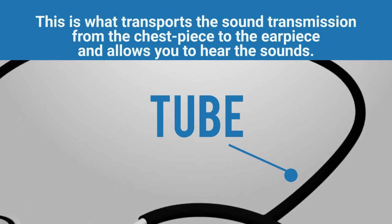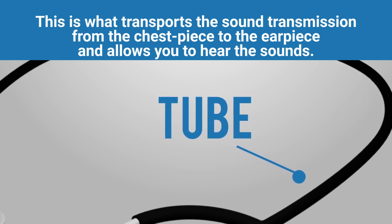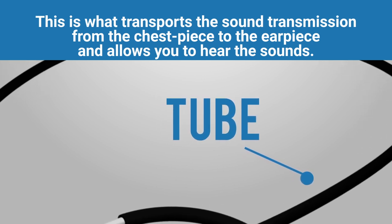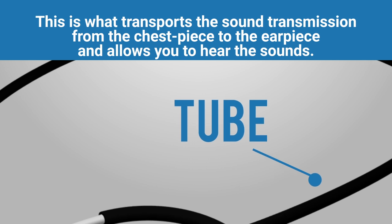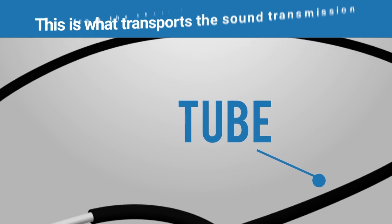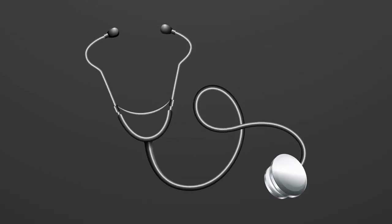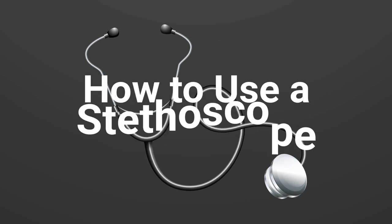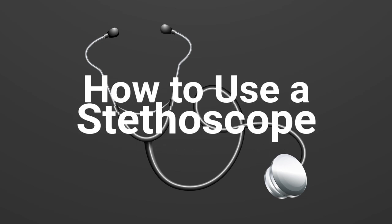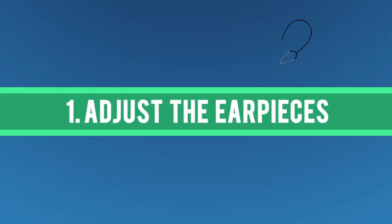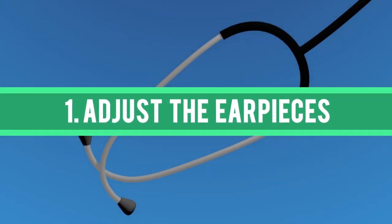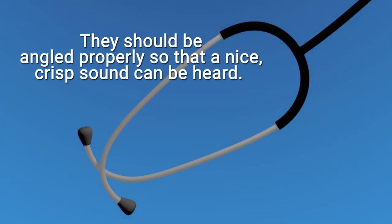The tubing transports sound from the chest piece to the earpiece, allowing you to hear the sounds. Now that you're familiar with the parts of a stethoscope, let's talk about how to use one. The first step is to adjust the earpieces — they should be angled properly so that a nice crisp sound can be heard.